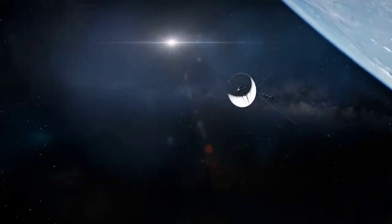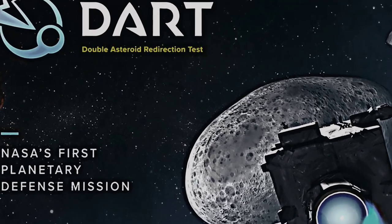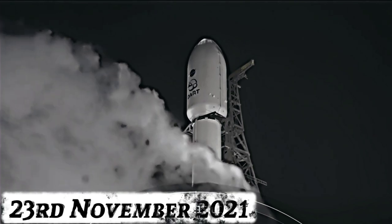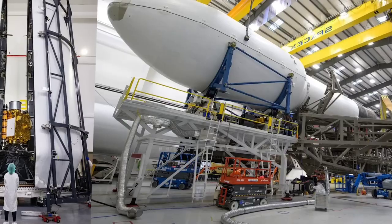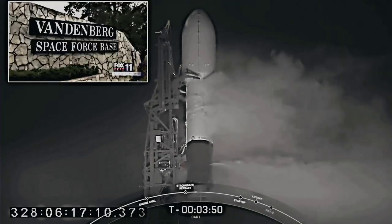To test this idea, NASA conducted an experiment called DART, which stands for Double Asteroid Redirection Test. On November 23, 2021, they launched the DART spacecraft using the SpaceX Falcon 9 rocket from the Vandenberg Space Force Base.